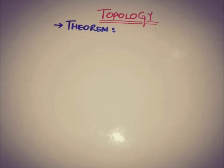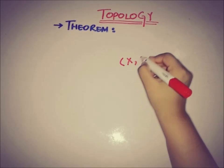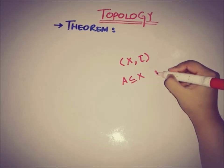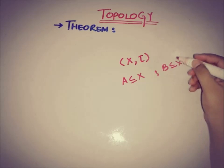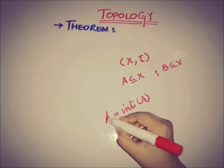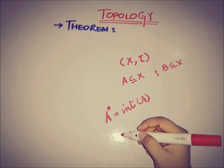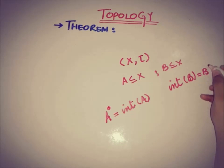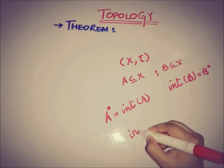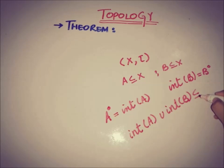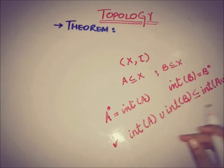The statement of the theorem is: if X and tau is a topological space and there are two subsets A and B of X, then if we take the interior of set A — that interior is also written as Int(A) but the notation of interior is A dot — the interior of A union the interior of B is a subset of the interior of A union B. This is the core of this theorem.